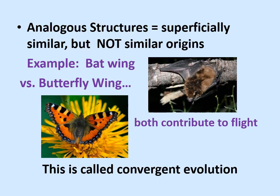Both contribute to flight, but they are different in evolutionary origin — the evolution of bones versus the different tissues that make up the wings of the butterfly. These two living things, although they're both animals, are very different from each other evolutionarily, and if you look at the phylogenetic tree of animals, they're in very different places on that tree.